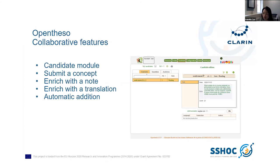The candidate module is another method to add concepts in a collaborative way. Users can discuss a candidate concept together. It can already be enriched by adding labels and even translations, to be ready for integration into the thesaurus. The candidate can be rejected, but if it is validated, it is automatically added.